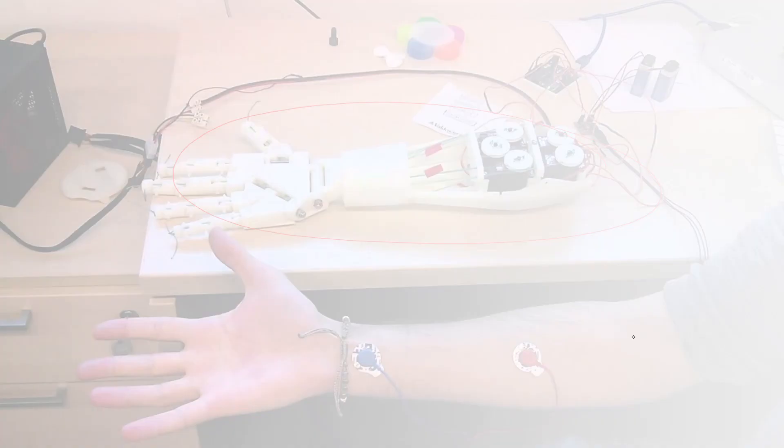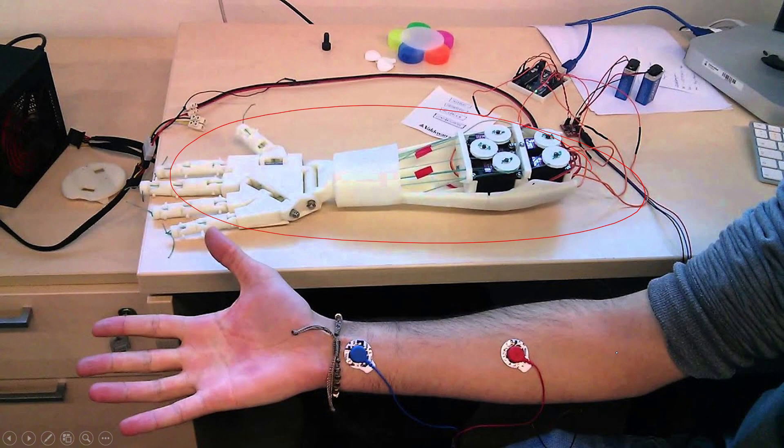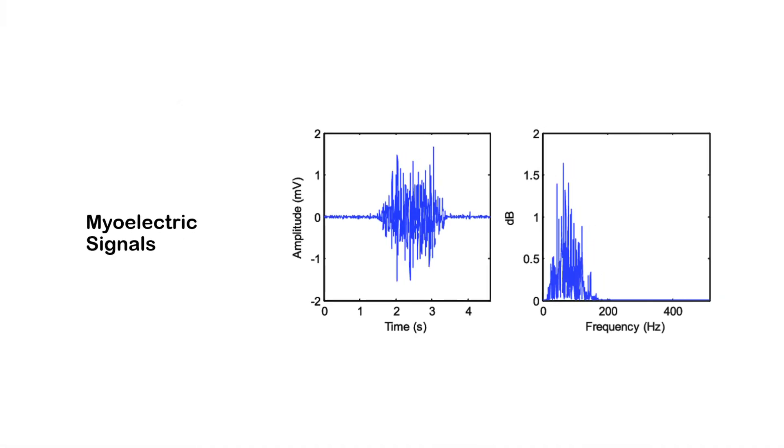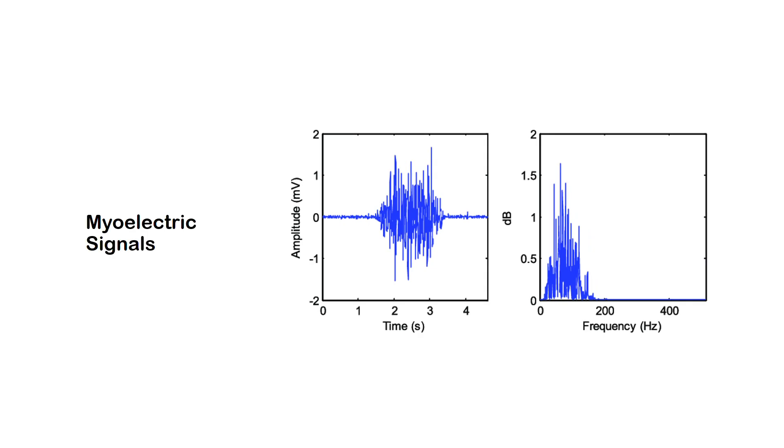EMG is being extensively used in the control now of robotic mechanisms to achieve prosthesis. The EMG signal amplitude lies between 1 to 10 millivolts, so you can see that the signal amplitude is very weak and of course, the signal is influenced by noise.